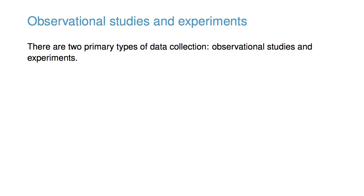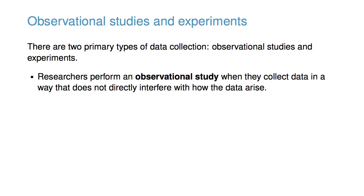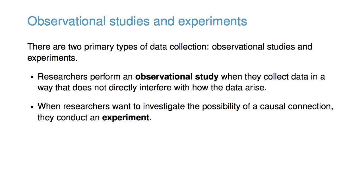There are two primary types of data collection: observational studies and experiments. Researchers perform an observational study when they collect data in a way that does not directly interfere with how the data arise. On the other hand, when researchers want to investigate the possibility of a causal connection, they conduct an experiment. In an experiment, the researcher controls who is allocated to receive the treatment and who is not.